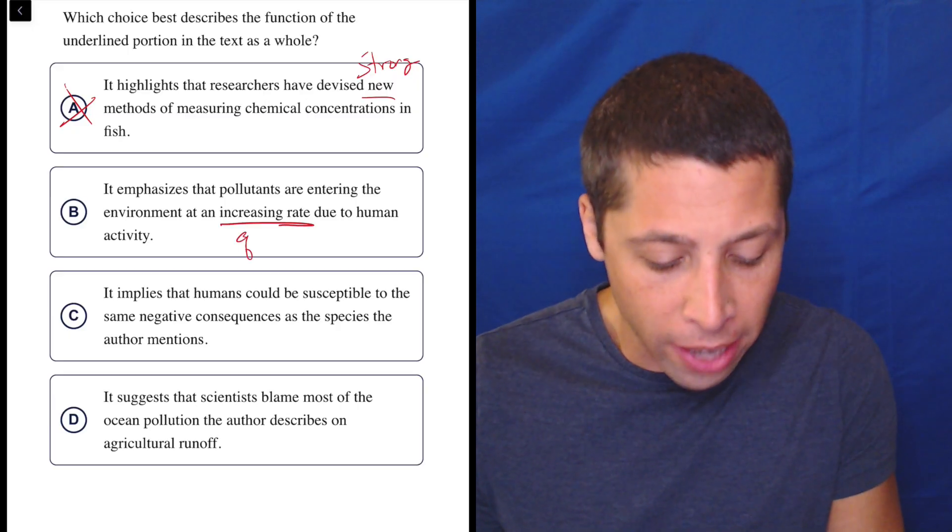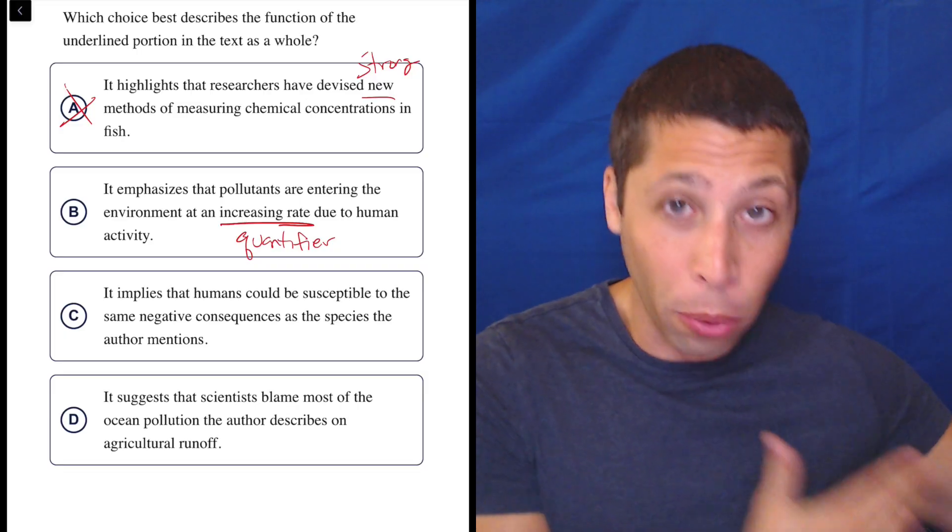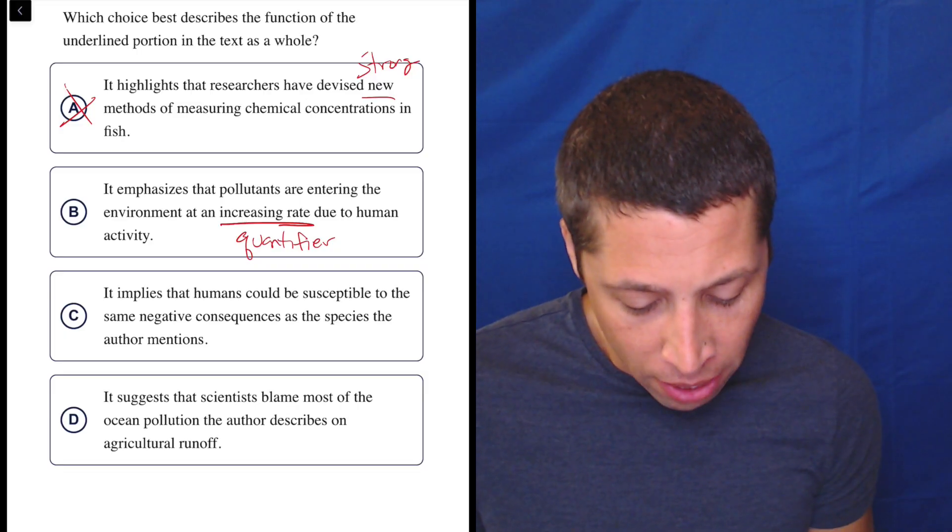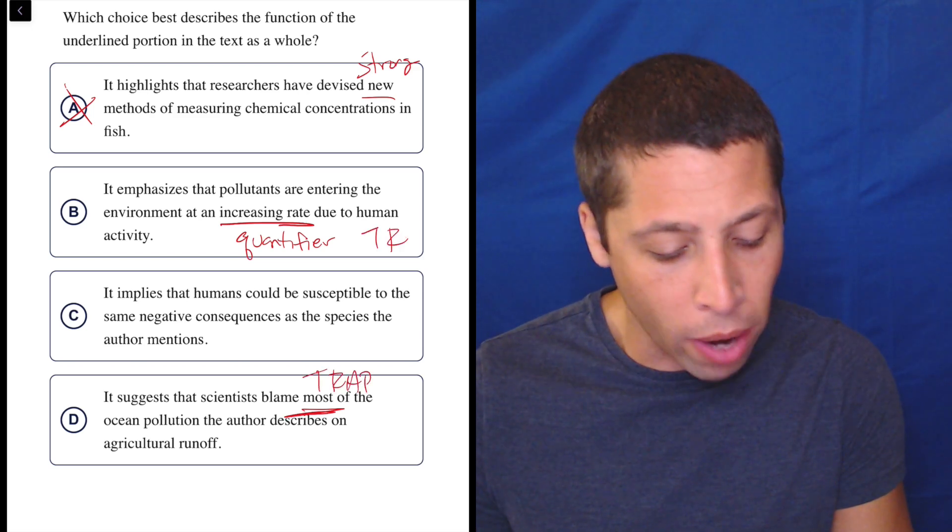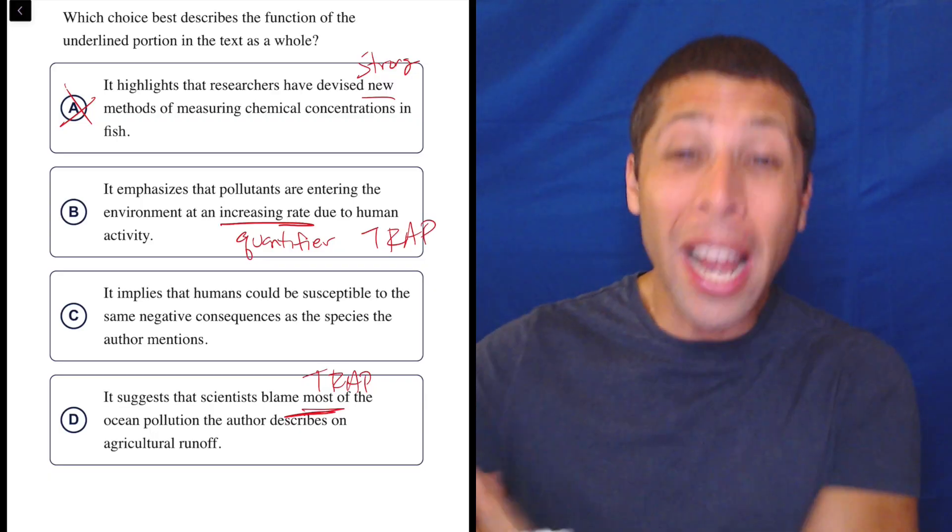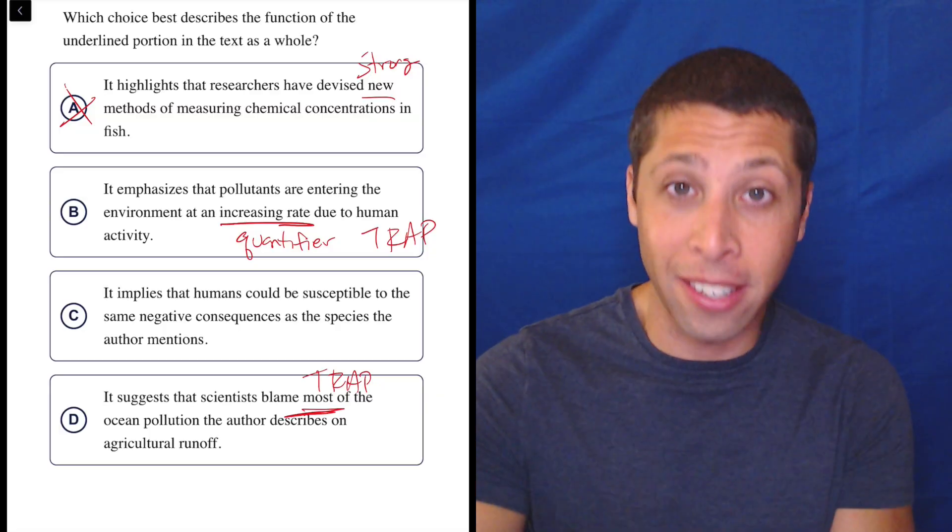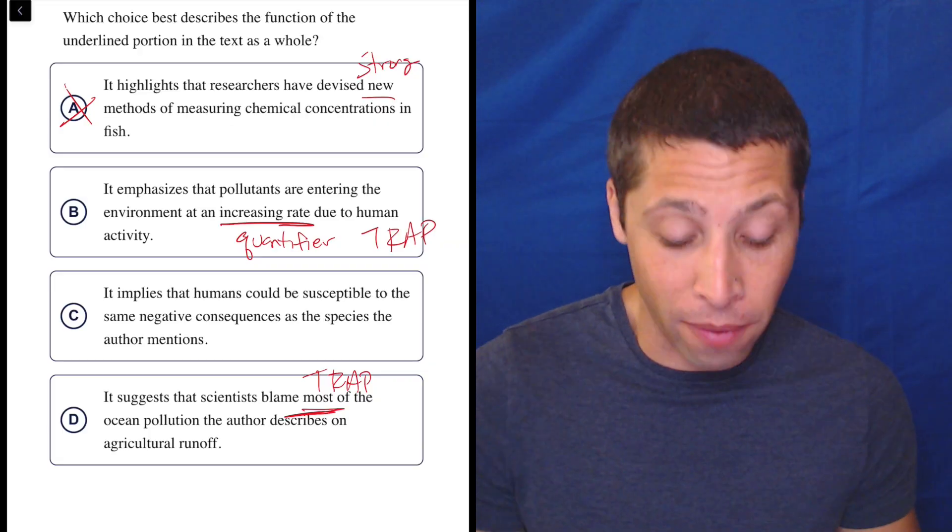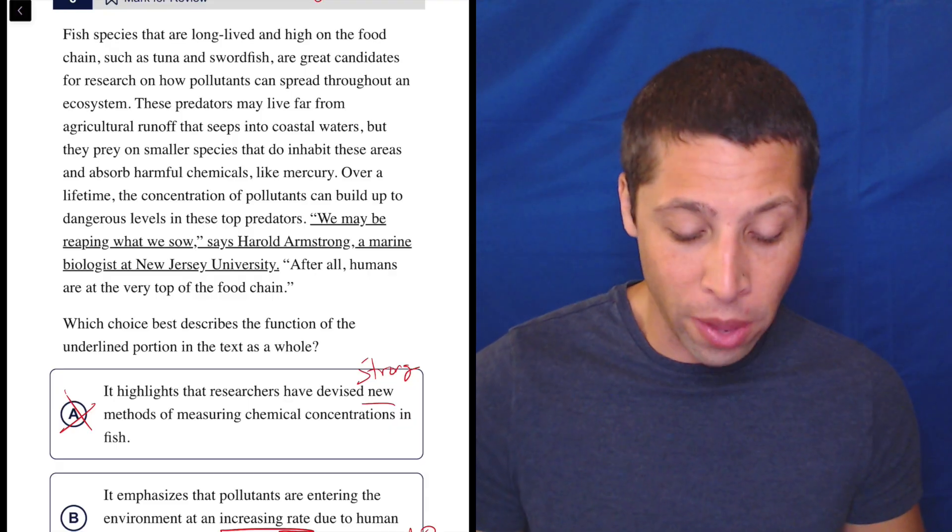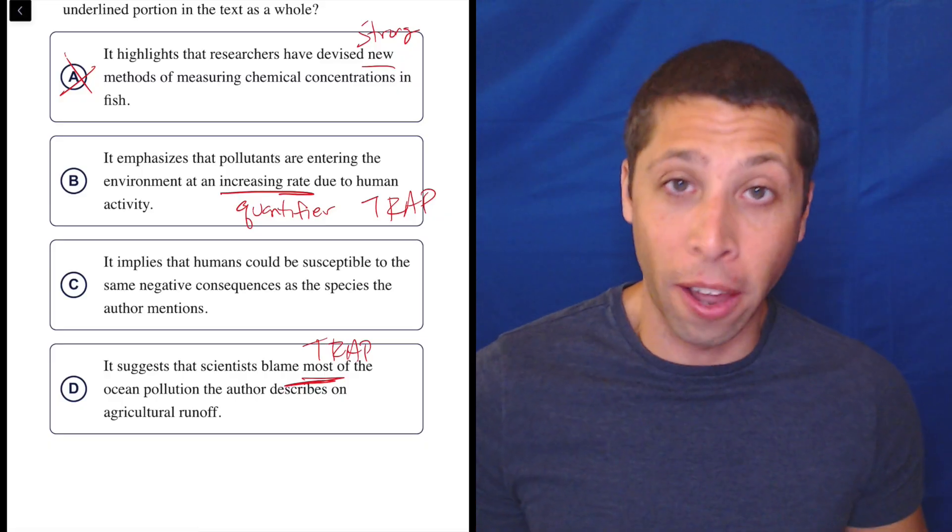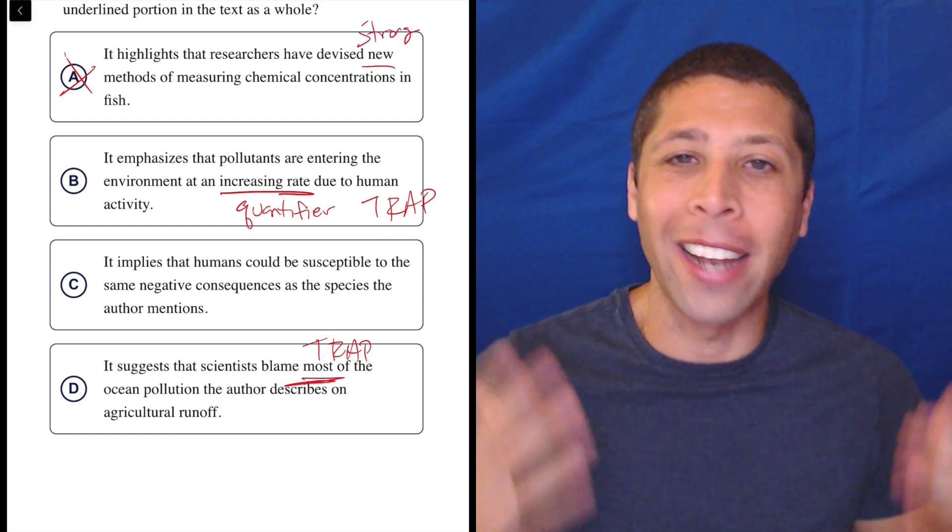Increasing rate, that is a quantifier trap. Whenever we start talking about numbers in answer choices, we got to be very nervous. Does the passage support those numbers? The same thing happens in choice D, where we have scientists blame most of the ocean pollution. This is another clear trap. These are words that I would sense right away as soon as I'm reading the answer choice. Even if I had never read the passage, those would be answer choices I'd be very suspicious of. Now, it doesn't mean that they are guaranteed to be wrong. It just means that we need to go checking for these ideas in the passage. And in this case, we will not find them. They do not say that pollution is entering at an increasing rate. That is just our knowledge from current events that we are going for there. And it does not say that the scientists blame most of anything on the agricultural runoff. They might blame some of the pollution on that. But not blaming most of the pollution on that is a different story altogether.